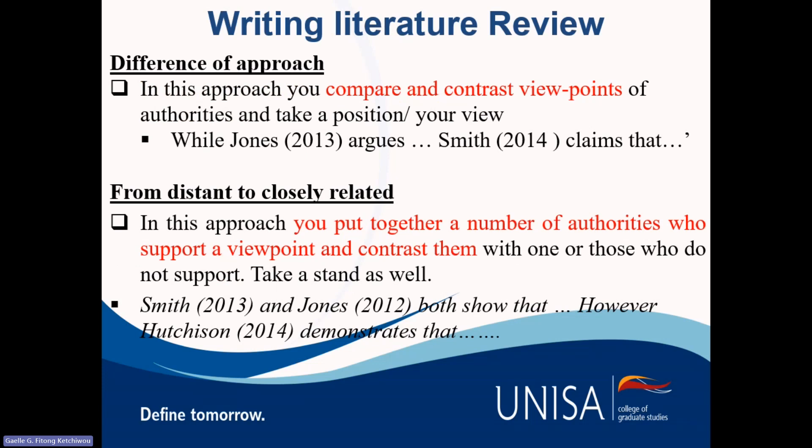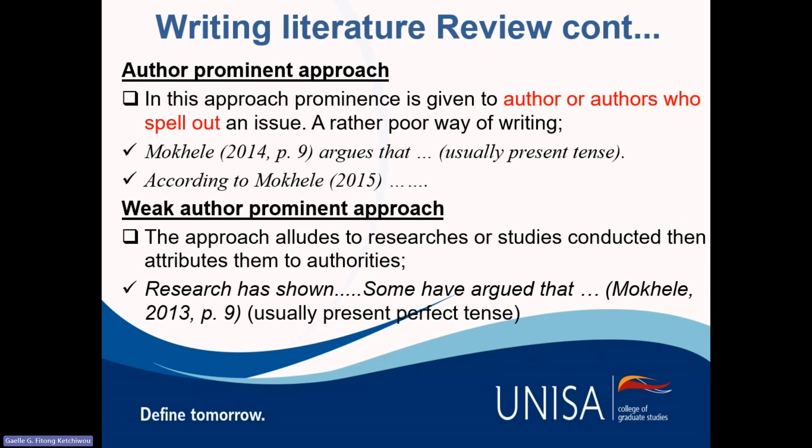In terms of writing your literature review, there are different approaches. You can compare and contrast views — for example, while John said this, Smith said something different. That is a way of presenting contrasting views. You can also group together authors who have said the same thing and then point out another group that said something contrary. For example: Smith and John both show that..., however, Fitton says something else. This shows contrasting views while grouping them together so the reader understands the different arguments presented by different authors.